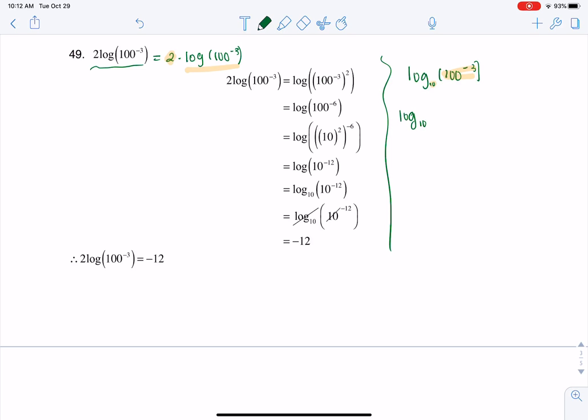I have log base 10. Now instead of 100, I'm going to rewrite that as 10 squared. And keep in mind, I still have that negative 3 exponent there.